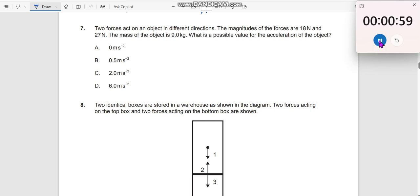Question number 7. Two forces act on an object in different directions. The magnitudes of the forces are 18 Newton and 27 Newton. We do not know what the directions are.